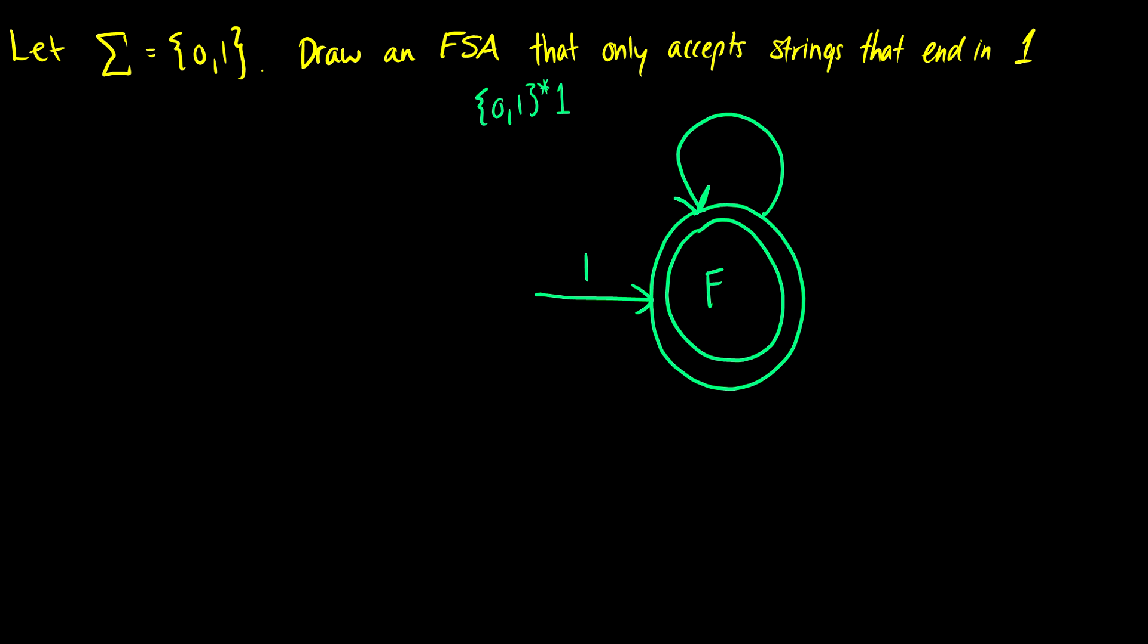If it loops from 1, it's going to accept it. But if there's a 0, then it's going to go to some other state until it hits a 1 again.